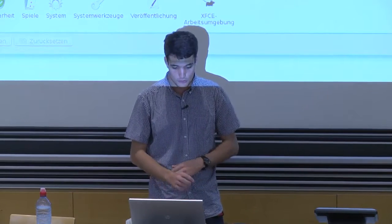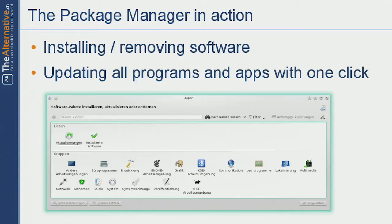This is what the package manager might look like. This is the KDE package manager — there's a search field, you type what you want to search for, for example Firefox, hit enter, and it will tell you to install it if it's not installed, or remove it if it is. You press OK and you're done. Of course, you can do that at the console too. If you like click, aim, and point, you're going to have very simple things for that. And then there'll be a message: 'hey, there are new updates available,' you click install and that's it.